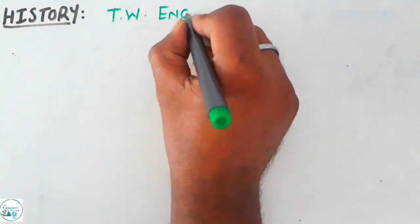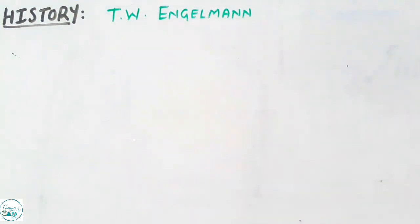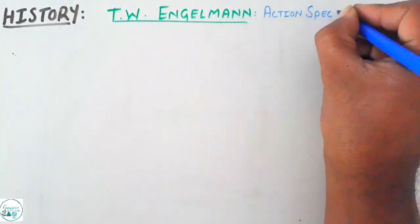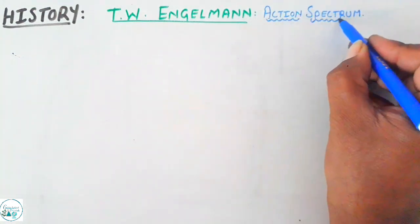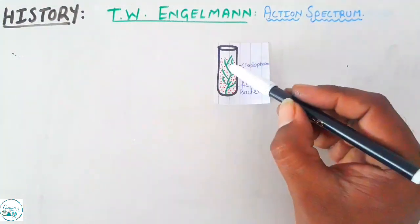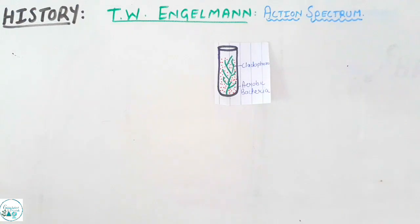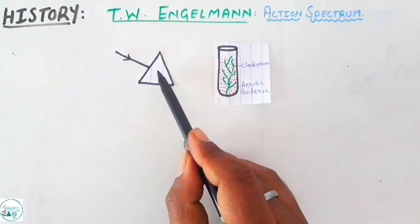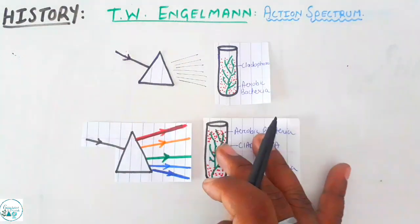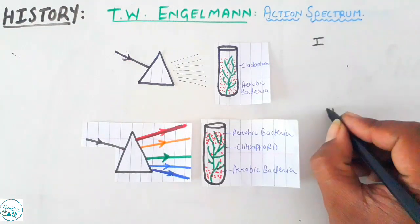Another scientist to take into consideration was T.W. Engelmann. He worked on an experiment called the action spectrum of photosynthesis. In the test tube he took the alga called Cladophora and a suspension of aerobic bacteria and placed it before a prism. We know the prism would split the light into its constituent colors.